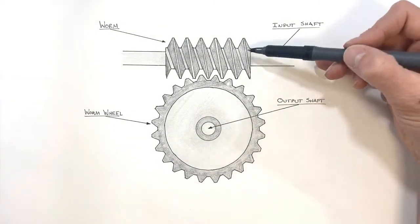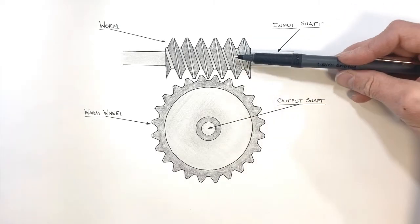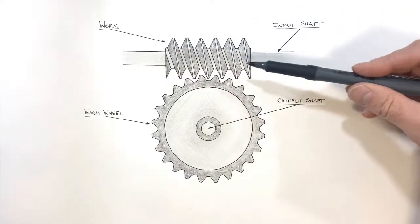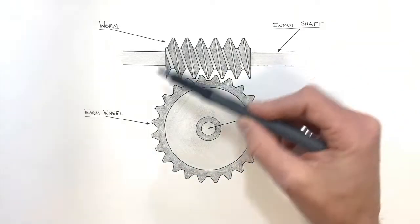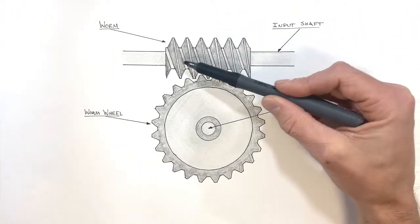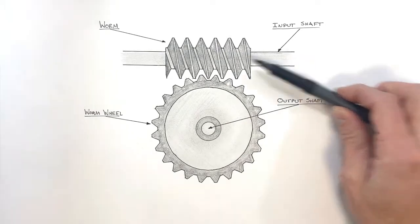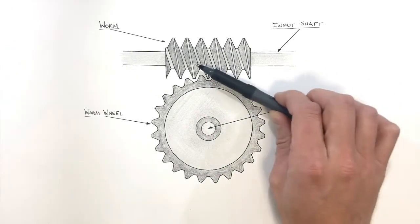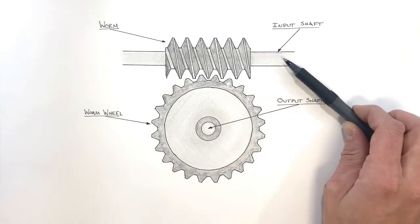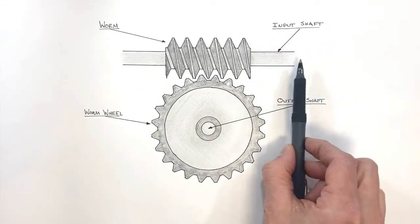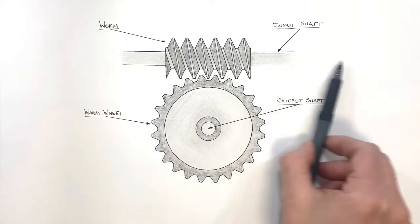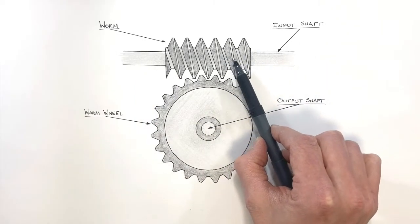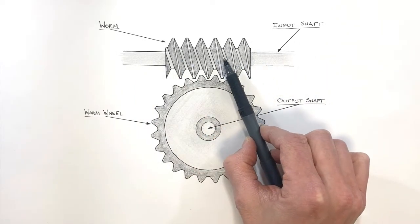Normally what happens when we turn a screw is that screw moves into some base material. But when dealing with a worm gear assembly, we actually hold this screw in place. This input shaft, if we were to put this into some machinery, would be held in place so it could rotate, but it wouldn't be able to move left or right. That would in turn hold this worm gear in place.